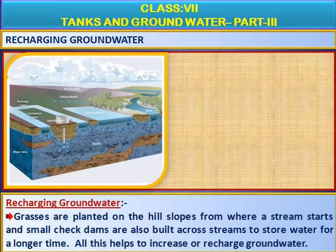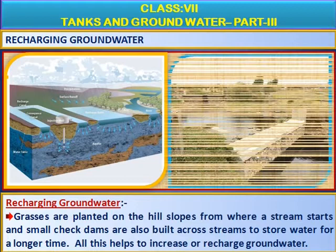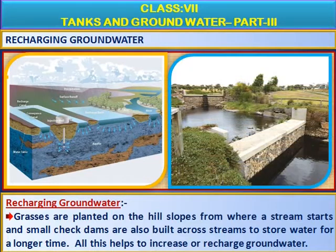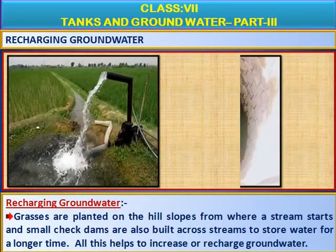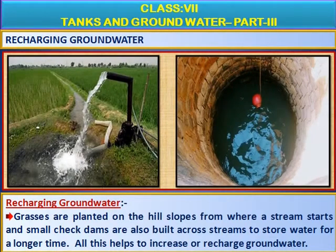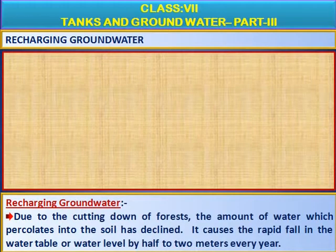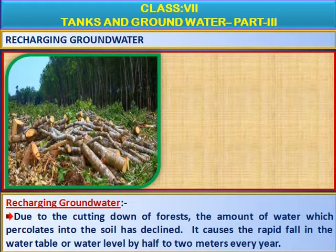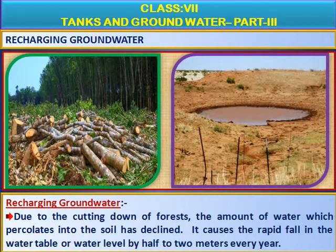Grasses are planted on the hill slopes from where a stream starts, and small check dams are also built across streams to store water for a longer time. All this helps to increase or recharge groundwater. Due to the cutting down of forests, the amount of water which percolates into the soil has declined. It causes the rapid fall in the water table or water level by half to two meters every year.